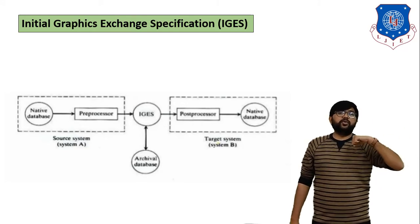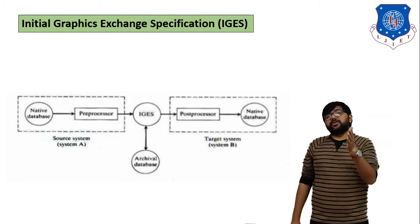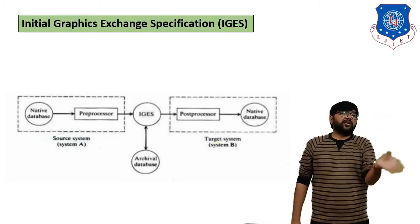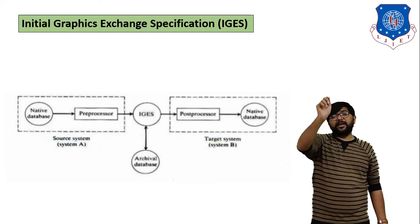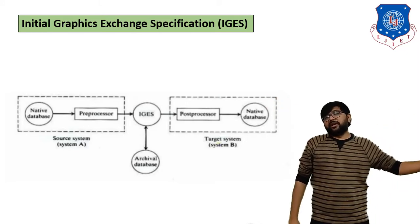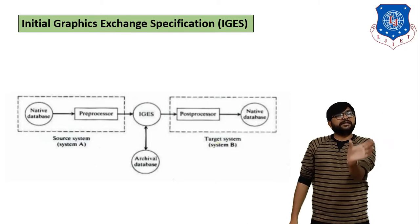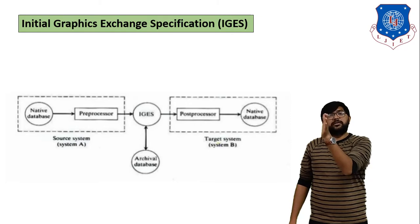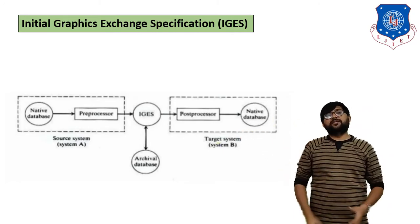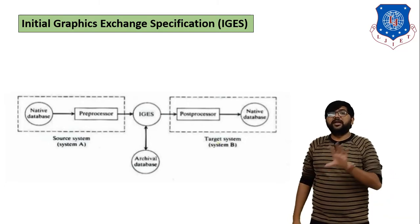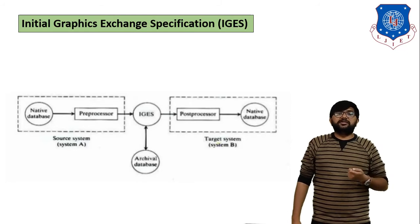Based on the block diagram, we can understand Initial Graphic Exchange Specification as follows. Suppose your native system is using AutoCAD software — the native database has an AutoCAD file. Using a preprocessor, you convert the AutoCAD file into IGES format. Suppose system A uses AutoCAD and system B uses SolidWorks. First you convert the AutoCAD file to IGES using the preprocessor, then you use a post-processor to convert the IGES file to SolidWorks format. IGES is used to transfer data from one specific software to another using various graphic standards.